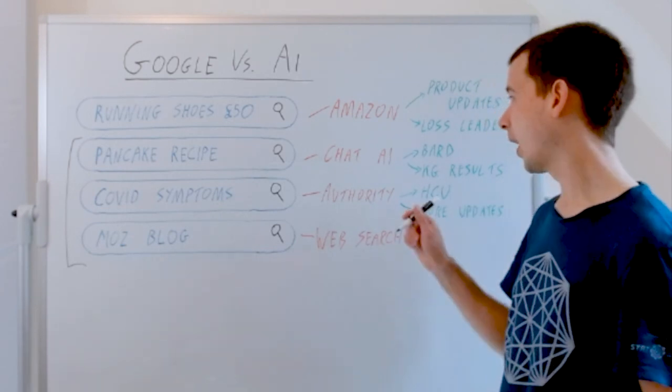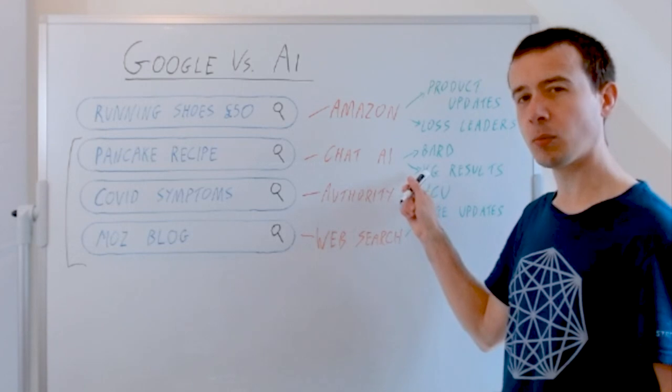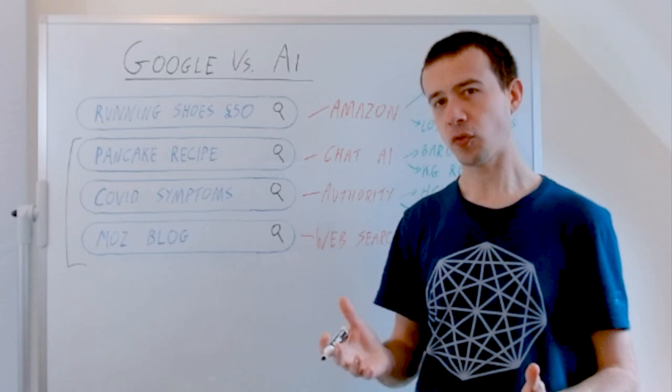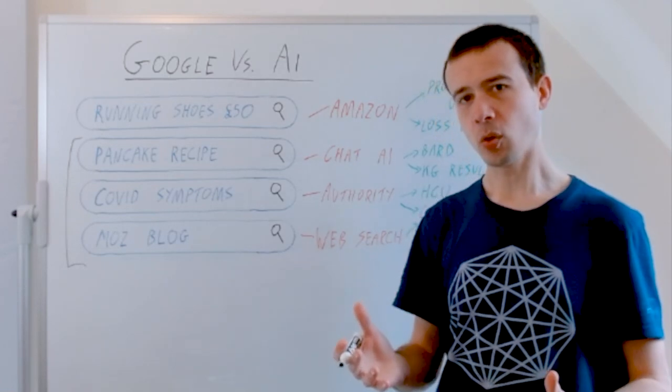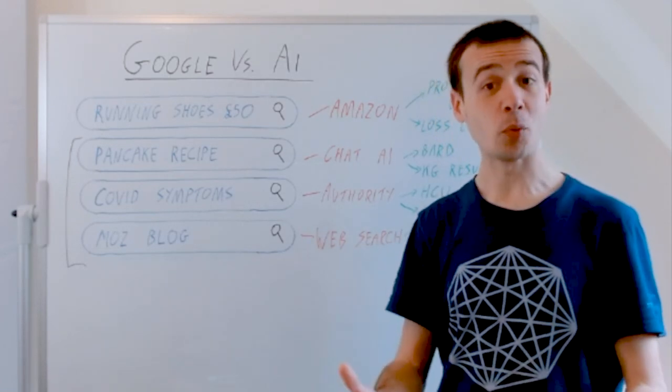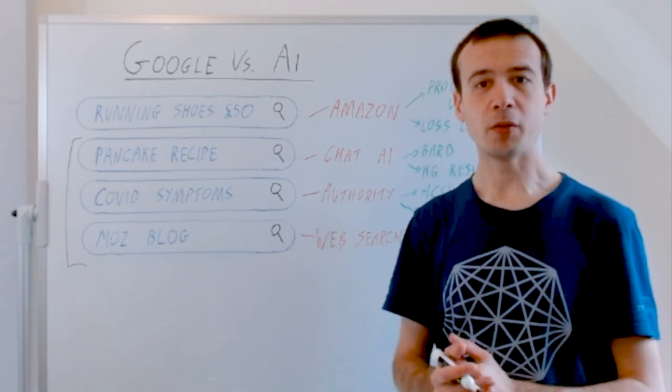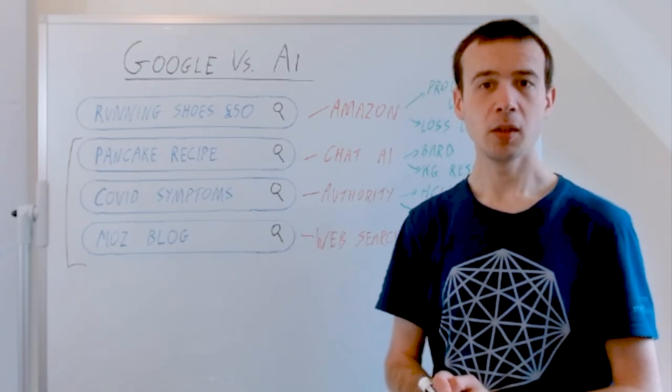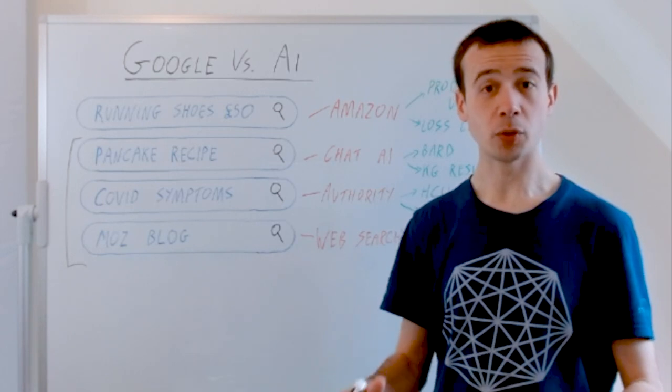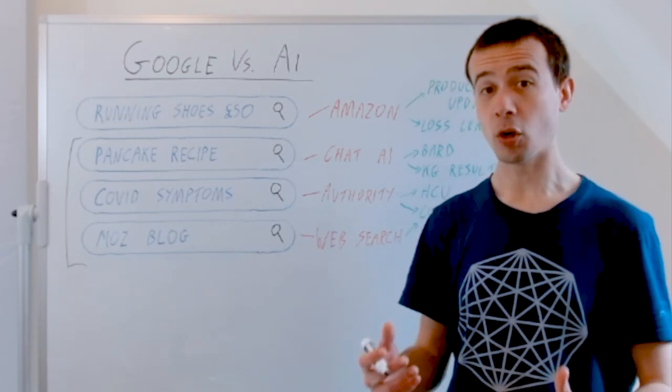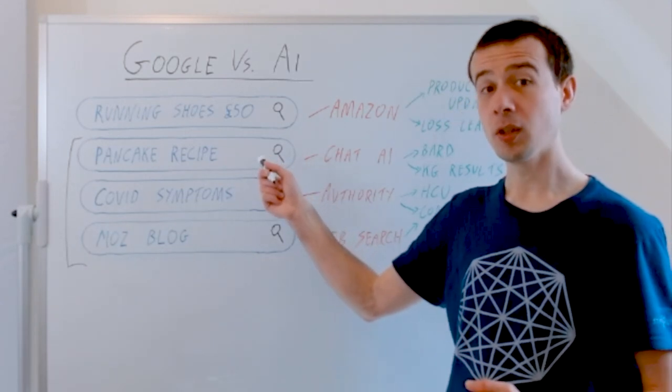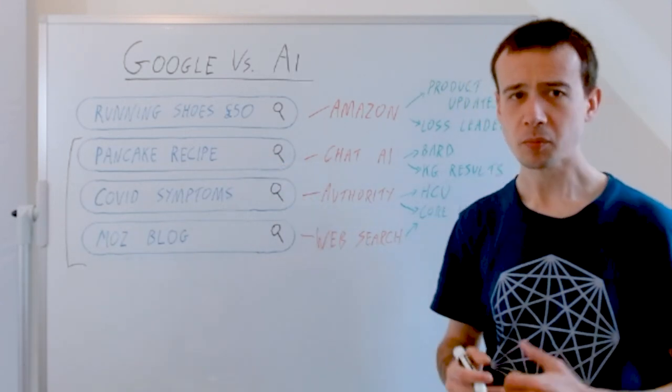And then we should expect to see more and more knowledge graph results. At the moment, there are a lot of things you can search for on Google where you won't see a website as a result. If you search for something like five liters in gallons, then you won't see a website as a top result, you'll see a knowledge graph result. I'd expect that to become more and more common because that is a better answer for these kinds of queries often than showing a website.